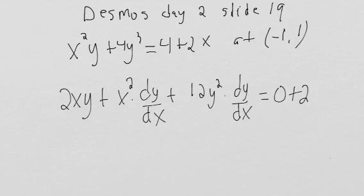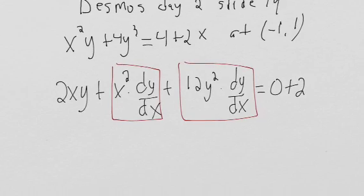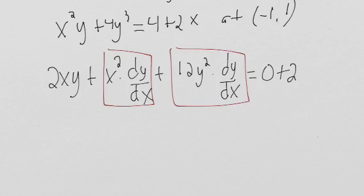Alright, so we want to isolate dy/dx. We have two pieces that have dy/dx. There's the first piece, there's the second piece. So we have to move everything else over. At the same time, let's factor out dy/dx to save a step.